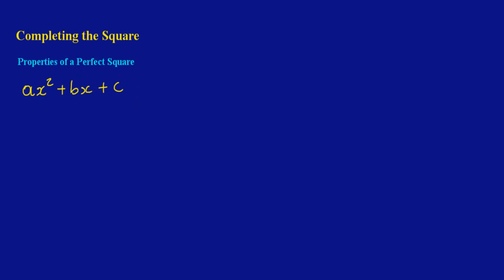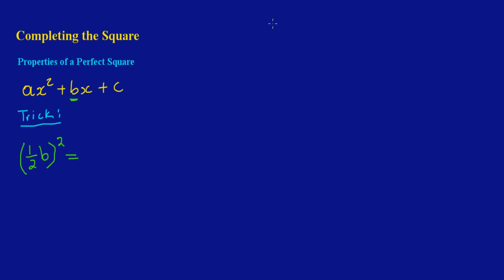If a quadratic is a perfect square, the general thing to do is to take half — and this is a neat little trick I'm showing you. This is a neat little trick to know when a quadratic is a perfect square. I would have to take a half of B, square it, and that must be equal to the product a times c. So this value and this value must work out to be the same thing if the quadratic is a perfect square.